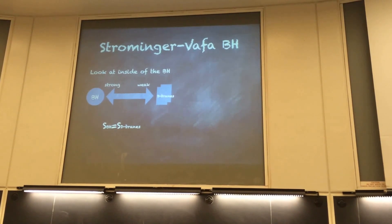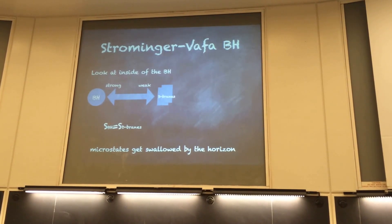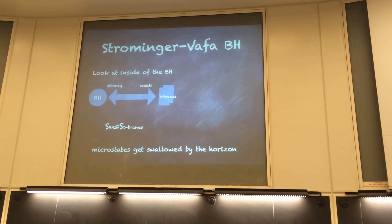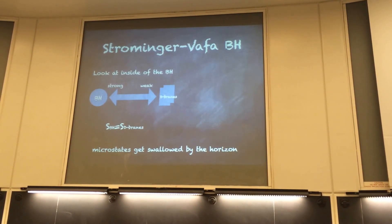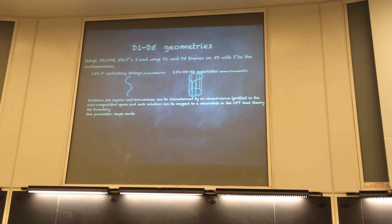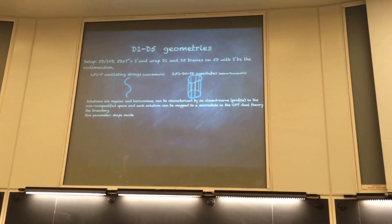The microstates will get swallowed by the horizon — this will increase the entropy. The horizon in this model will disguise the microstate. So even with this action, we don't know what the microgeometries are. To find the microgeometries, we really need to solve the equations of supergravity to find those solutions.